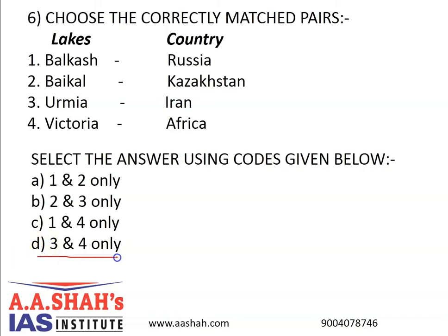1 and 2 are incorrect. Lake Balkash is in Kazakhstan and Lake Baikal is in Russia, so 1 and 2 are swapped and hence incorrect. The correct answer is D: 3 and 4 only. Lake Victoria is Africa's largest lake by area, the world's largest tropical lake, and the world's second largest freshwater lake by surface area after Lake Superior in North America. In terms of volume, Lake Victoria is the world's 9th largest continental lake. Lake Balkash is one of the largest lakes in Asia, located in Central Asia in south-east Kazakhstan, belonging to an endorheic closed basin shared by Kazakhstan and China, with a small portion also in Kyrgyzstan.